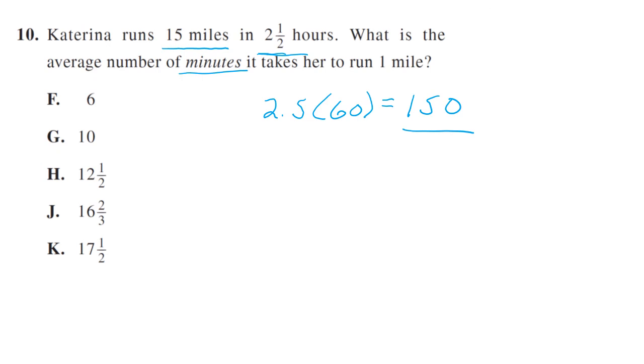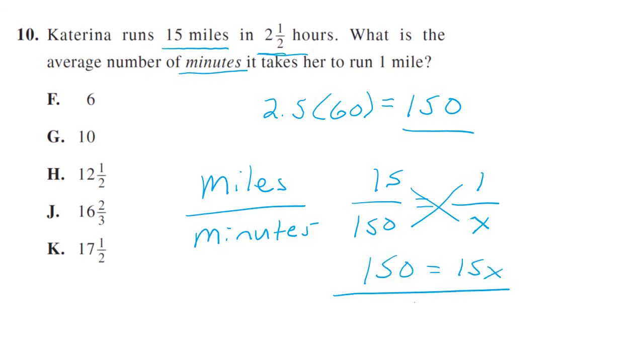Now we can set up a proportion miles over minutes. So she runs 15 miles in 150 minutes. We want to know how many minutes it takes to run one mile. So we cross multiply and we get 150 equals 15X. Divide both sides by 15 and we get X equals 10. So the answer is G. So that's a good one.